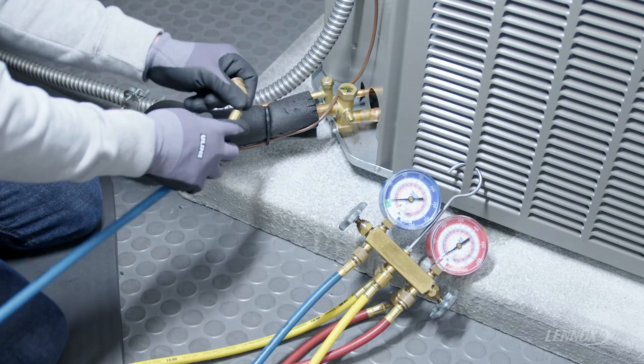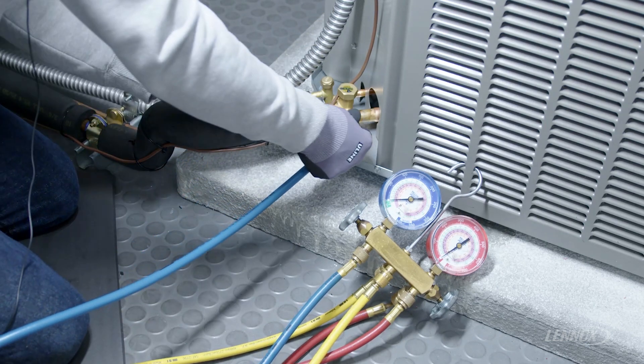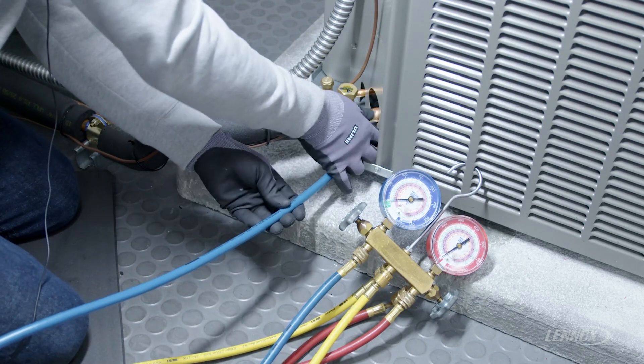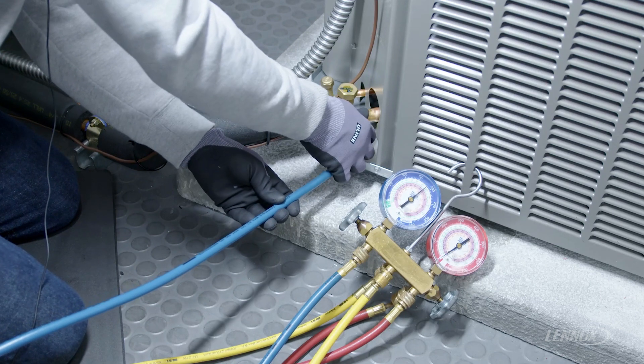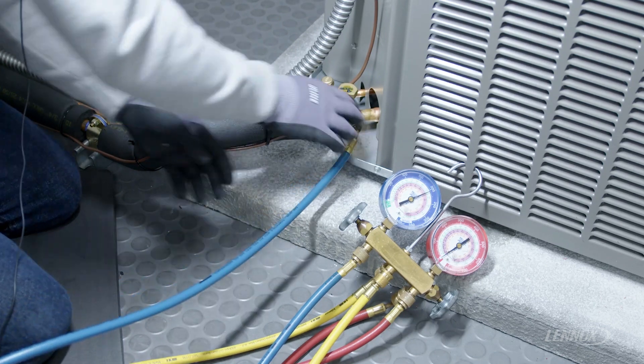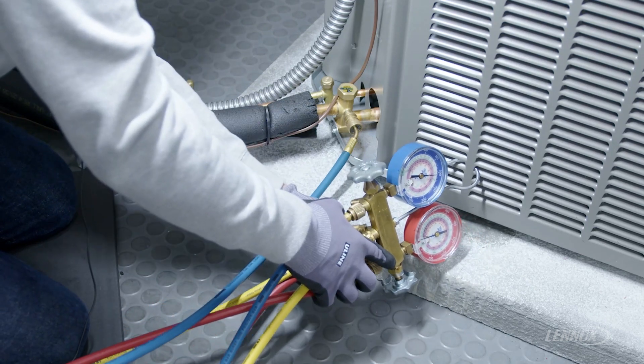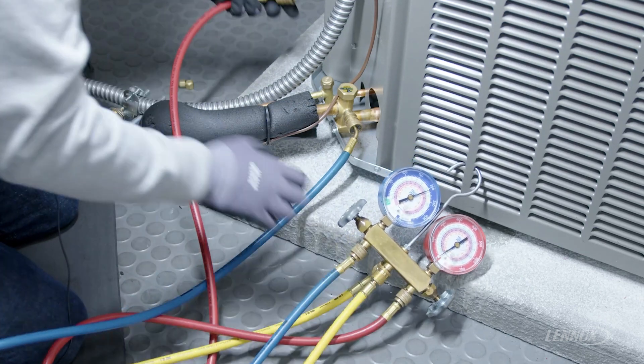We'll take our gauge off of our manifold, connect it up to our service port and turn it all the way in. We'll do that with both the suction and the liquid line hoses.